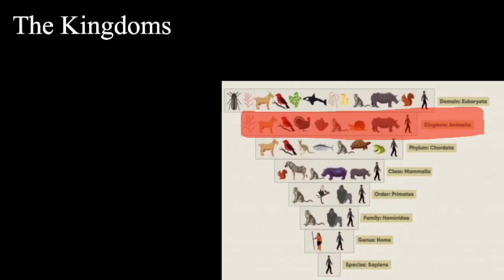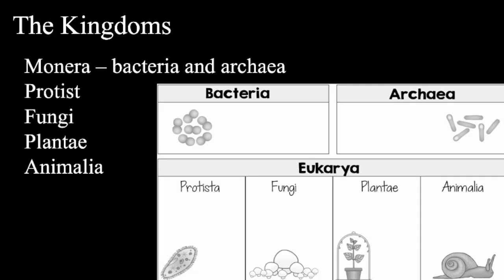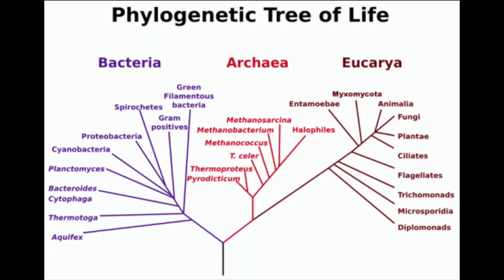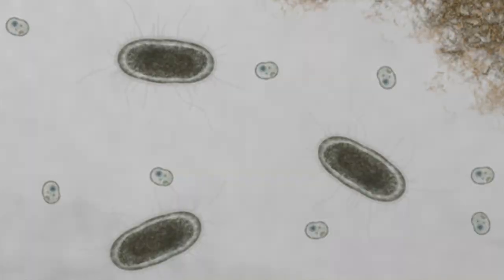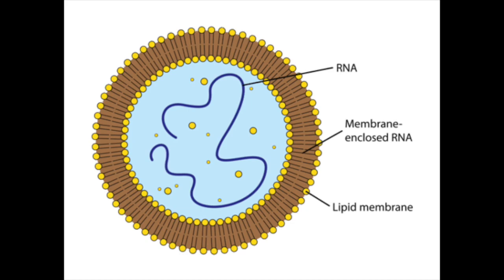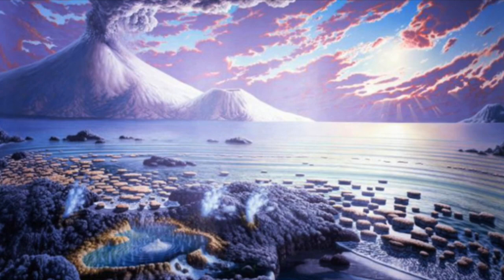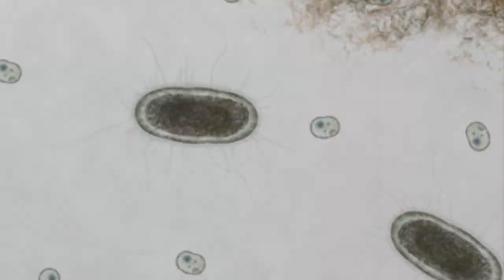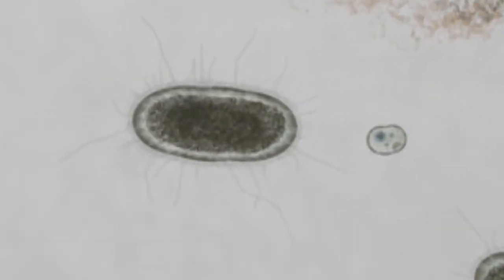Looking at the kingdoms, there are five kingdoms in total: Monera, Protista, Fungi, Plantae, and Animalia. Here we see the phylogenetic tree of life. The first cells would have likely been primitive prokaryotic cells, which may have only had organic compounds such as RNA surrounded by a membrane. Based on fossil evidence, prokaryotes appeared on Earth 3.5 to 3.8 billion years ago, making them the first inhabitants on Earth. From there, evolution happened.